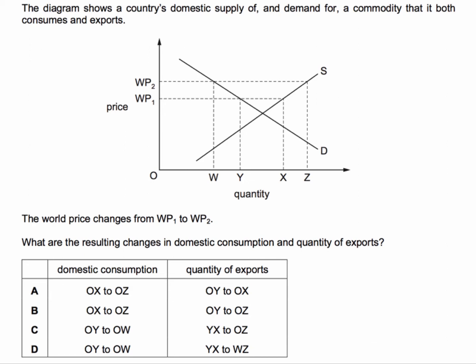Therefore YX is available to export. Now as a result of the increase in the world price, domestic consumption will contract to OW. Domestic supply, on the other hand, will expand from OX to OZ — producers are better able to supply more of this product at a higher world price, responding to the price mechanism and the profit motive.